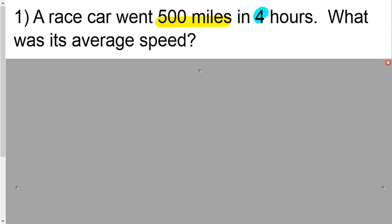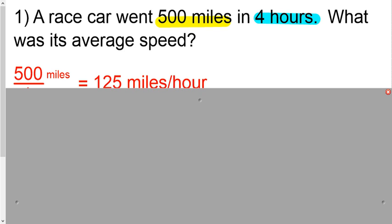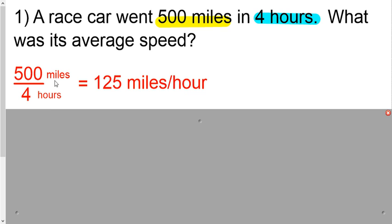And then we'd locate our time, and that was 4 hours. So it's distance divided by time. So 500 divided by 4. 500 miles divided by 4 hours is 125 miles per hour.